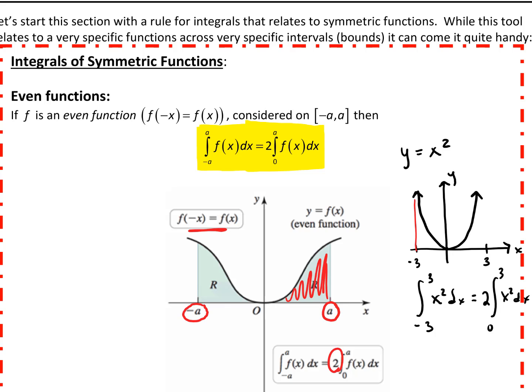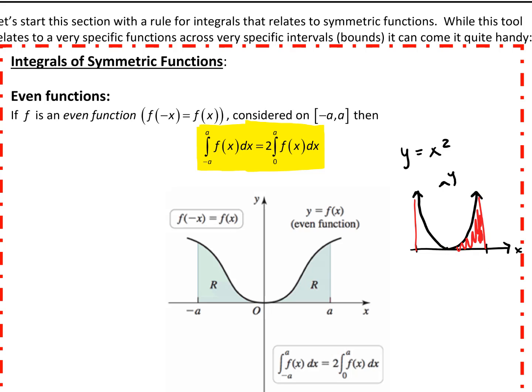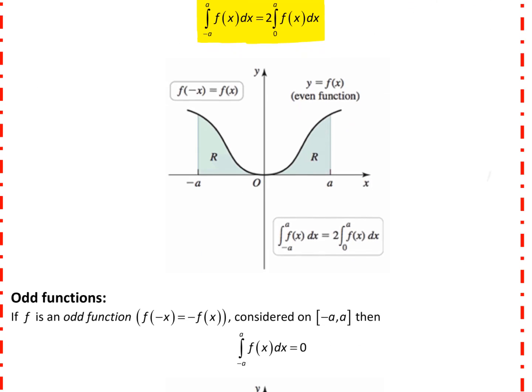Rather than going all the way from negative 3 to 3, we can say let's just look at it from 0 to 3 and double it. That's useful because a lot of times when we're computing a definite integral, plugging in 0 is easier to do than plugging in negative a. So with even functions, we can do that.